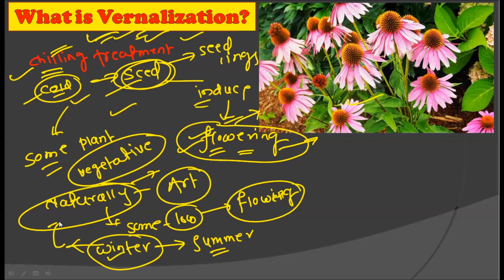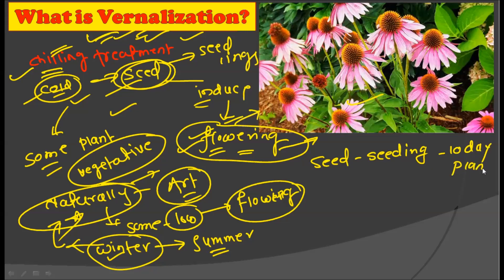By observing this naturally occurring phenomenon, we can use this method artificially as well. We take seeds, seedlings, or sometimes a 10-day-old plant and give it a chilling treatment. By giving it a chilling treatment, we can significantly reduce the time interval between vegetative growth and flowering — inducing early flowering using the vernalization method. Vernalization is not only artificial but is also a natural occurrence in nature.